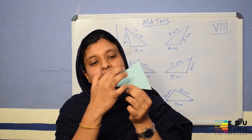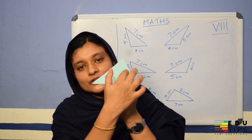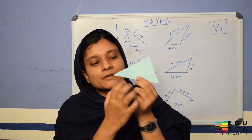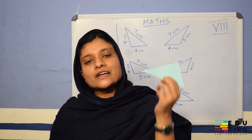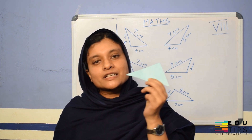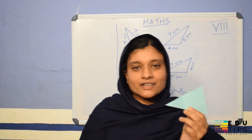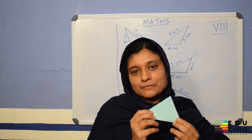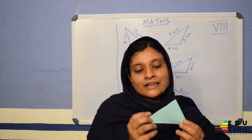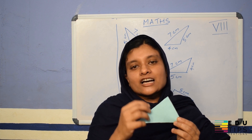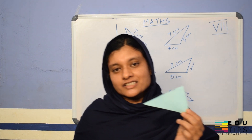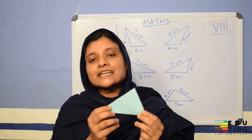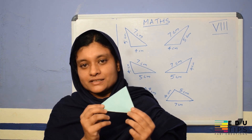What do we know about this triangle? A vishamabhujja triangle — a triangle having all sides different — is called a scalene triangle.